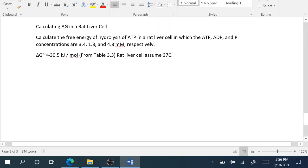This next problem is fairly straightforward - this is number 10 from the study guide. It says calculating Delta G in a rat liver cell. So calculate the free energy of hydrolysis of ATP in a rat liver cell in which ATP, ADP, and Pi concentrations are 3.4, 1.3, and 4.8 millimolar respectively. Now the study guide does this calculation at both 25 and 37 degrees C.